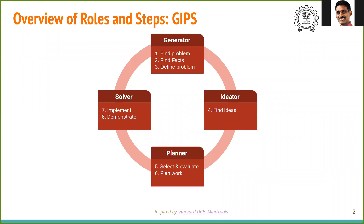The four roles are: a Generator, who identifies the problem; an Ideator, who finds possible solutions or gives ideas about solutions to the problem; a Planner, who selects among the various ideas and plans the work; and the Solver, who actually implements it and finally demonstrates the solution.